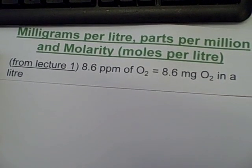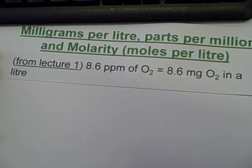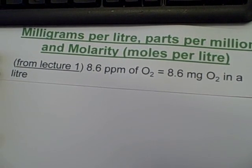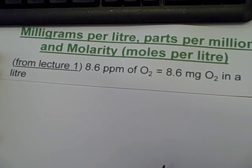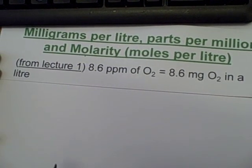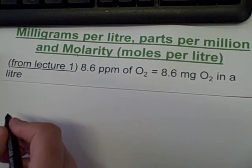8.6 parts per million of oxygen is the same as 8.6 milligrams of oxygen in a litre. Now what I'm going to try and work out is the number of moles per litre.